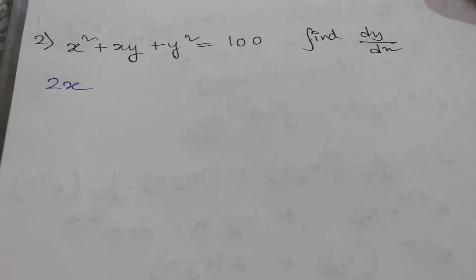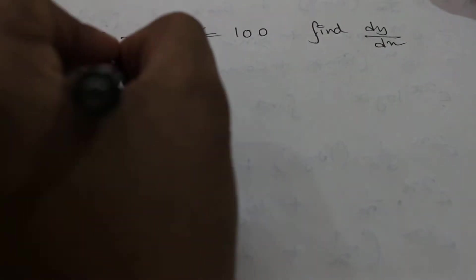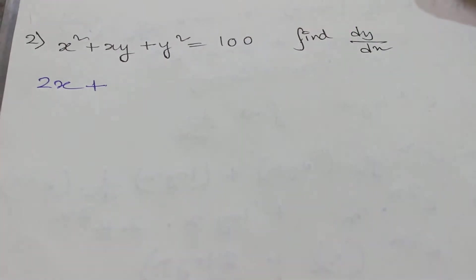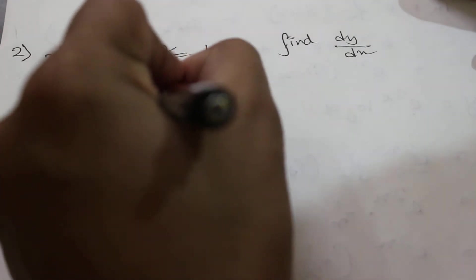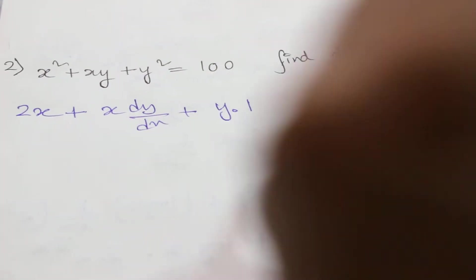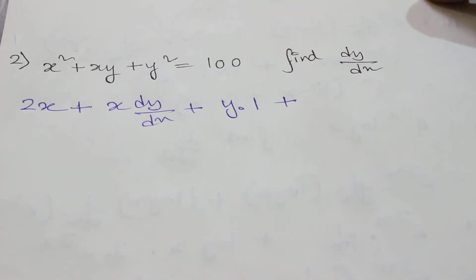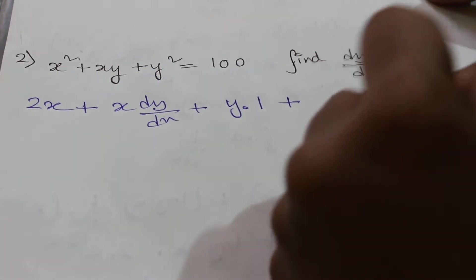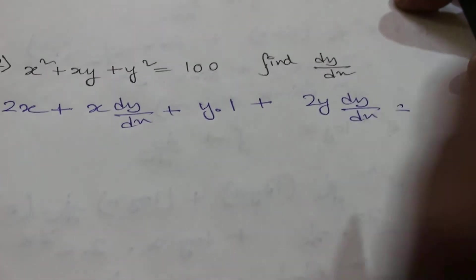So again we will start. Differentiation of x² is 2x with respect to x. We will solve it by UV method. So x dy/dx plus y, and differentiation of x is 1, plus differentiation of y² is 2y dy/dx. And differentiation of this constant term is 0.